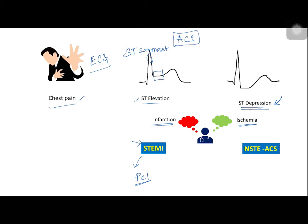This is most likely due to sub-endocardial ischemia, which happens due to decreased blood supply rather than a complete loss of blood supply. Though it is true that ST segment elevation is most probably AMI and ST segment depression is most probably ischemia, the converse is not true — infarction does not always cause ST elevation and ischemia does not always cause ST depression.